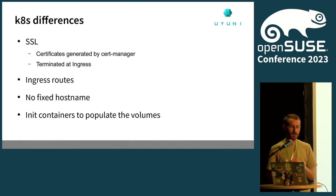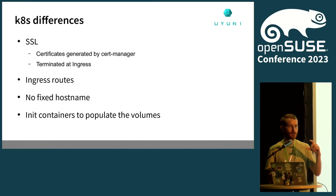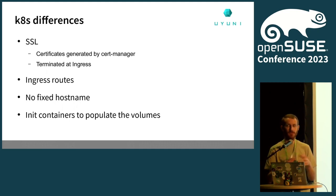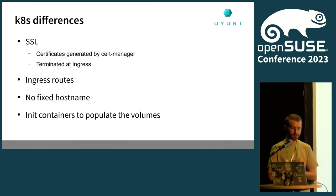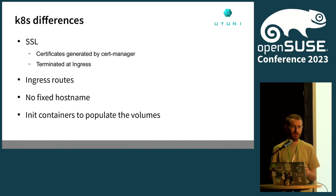In Kubernetes we use init containers to populate the volumes we attach with what is already in the image — for instance, RPM folder structures that need to be copied into the volume when they're empty. Podman does this automatically, but Kubernetes does not.